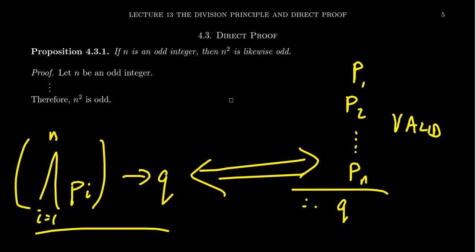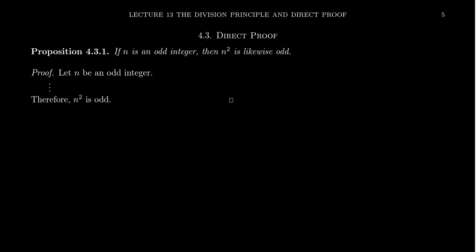As such, providing valid arguments — which are the only arguments we will ever want to provide — is really logically equivalent to proving that this conditional statement is true. So the most important and most fundamental of any proof patterns is to be able to prove that a conditional statement is true, because in the end, every proof is proving a conditional.